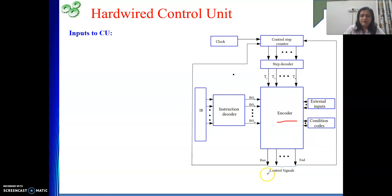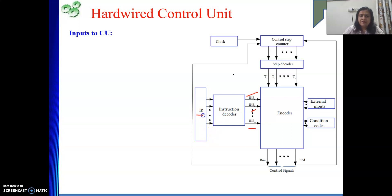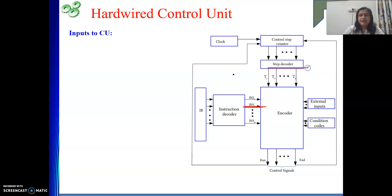The block diagram of the hardware control unit shows one block responsible for generating the signals — PC in, PC out, MAR in, MDR out, MDR in, WMFC, read, write, and all other signals we have seen. This block is driven by four inputs. One input indicates which instruction is being executed, coming from the instruction register connected to a decoder. The decoder tells which instruction is being performed, and at a time, only one output line of the decoder is active.